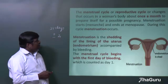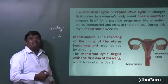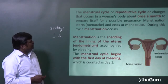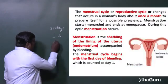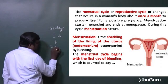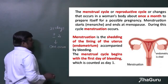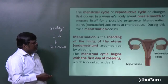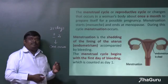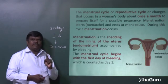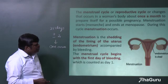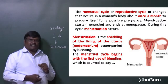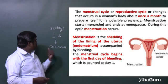This cycle will not occur if a female is pregnant. During this reproductive cycle, one ovum is produced in the ovary. There are two ovaries — right side and left side — and from these two ovaries, any one ovum is produced. Either from the right or left, but only one ovum is produced per cycle.